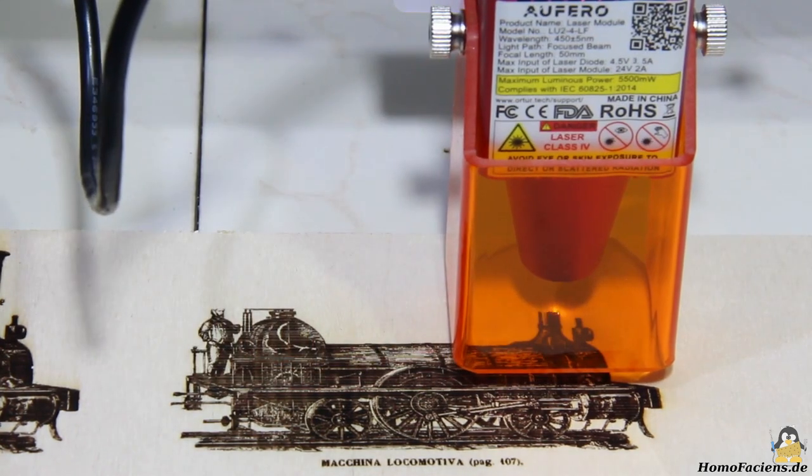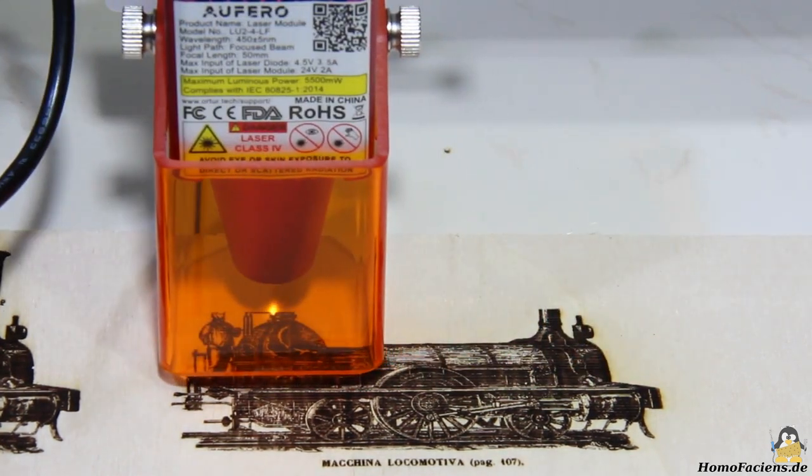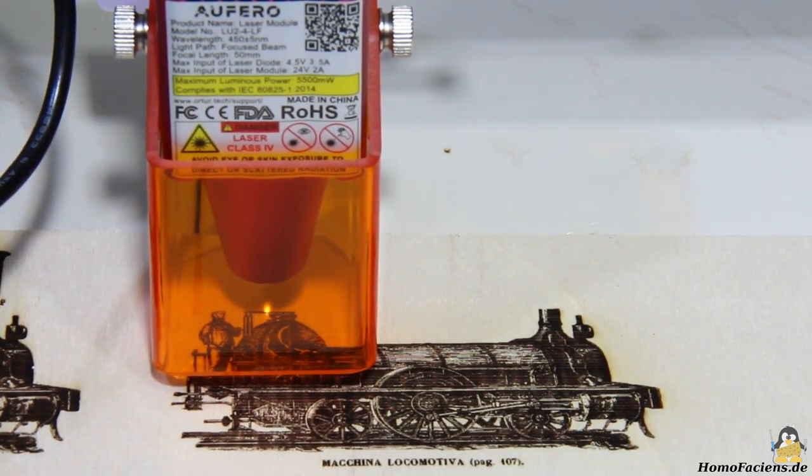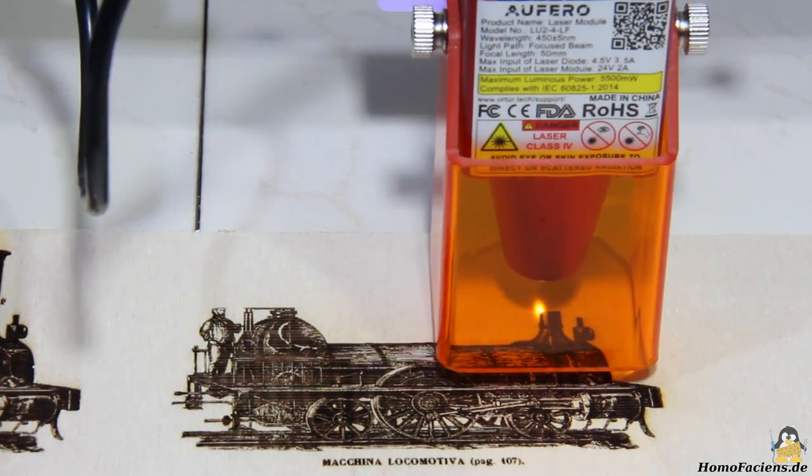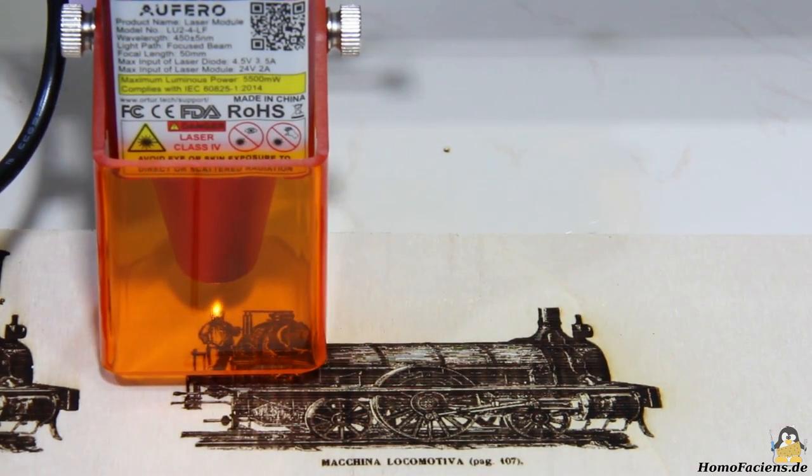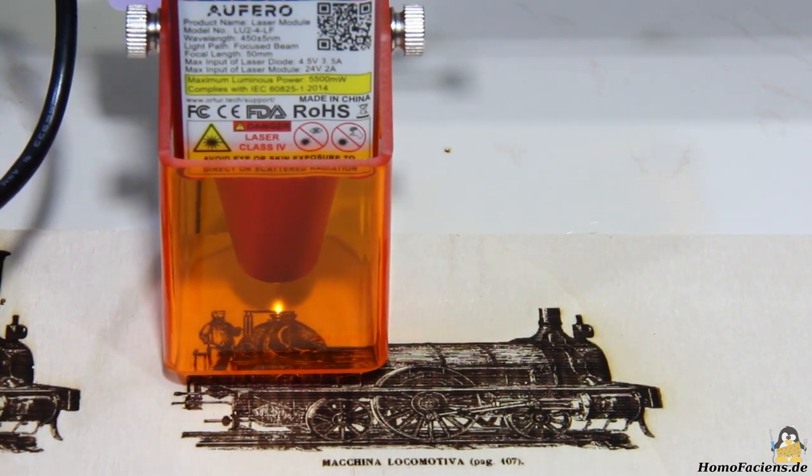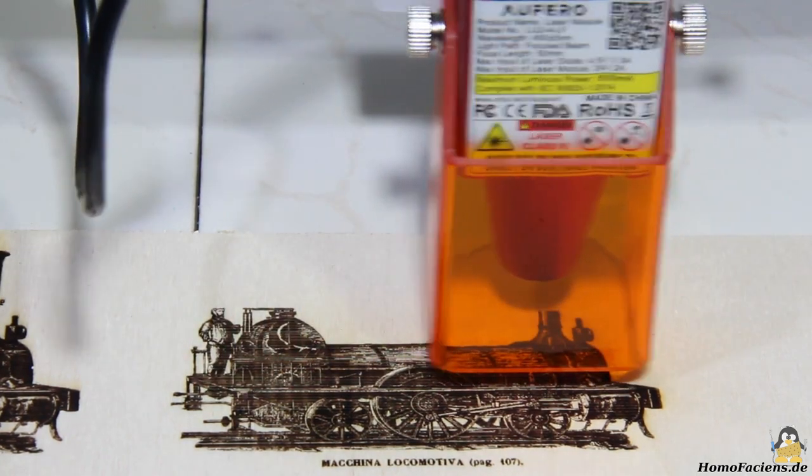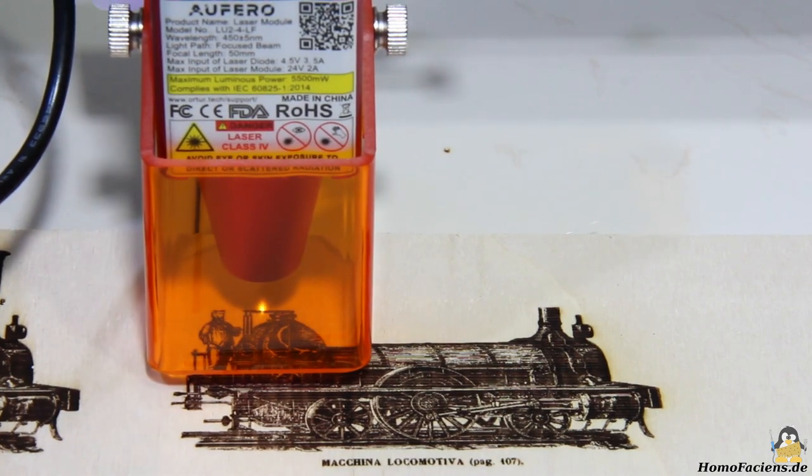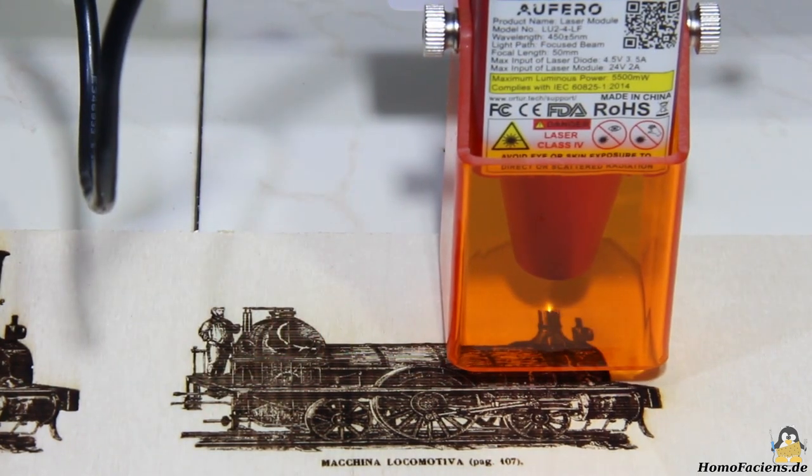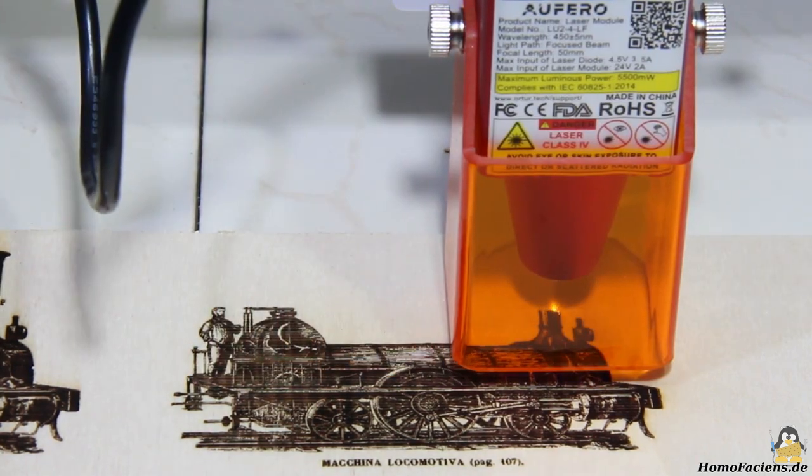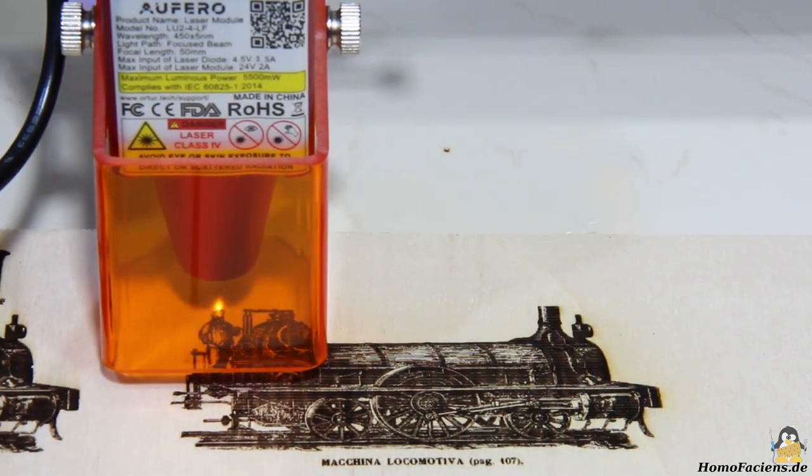An aluminum nozzle is screwed onto the lower end of the laser module. The fan installed on top used to cool the laser diode blows the exhaust air onto the workpiece through this nozzle. The purpose of this arrangement is to blow the smoke that is emitted when burning the wood away from the laser beam. Otherwise, the laser beam will be scattered on the dust particles, which means that less light power reaches the workpiece. It is a simple version of air assist, a method of improving the quality of engraving or cutting workpieces.